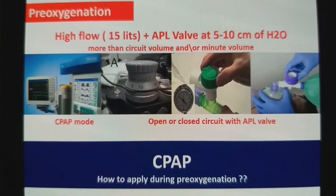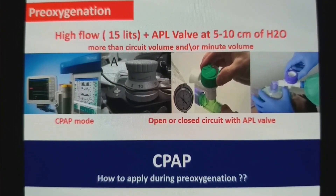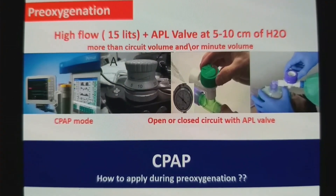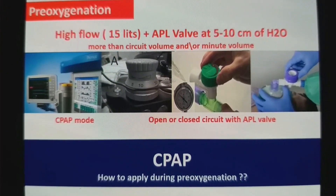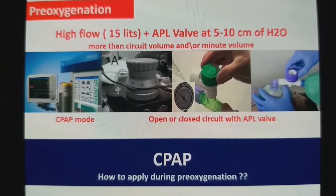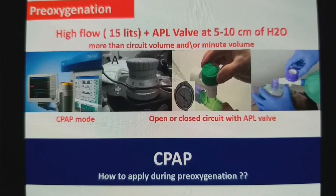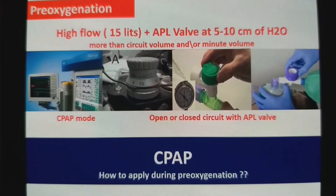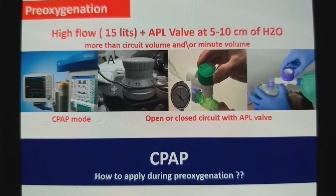Look at the pressure bar or pressure graph — it will reach 5 to 10 once you close the APL valve at 10. For those using a Bain circuit, you can also deliver CPAP by partially closing the APL valve of the Bain circuit and increasing the flow to 15 liters; optimal mask fitting will deliver CPAP.